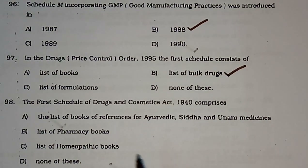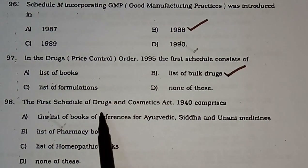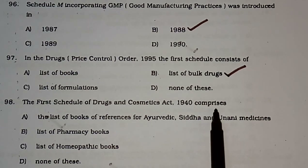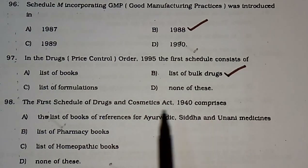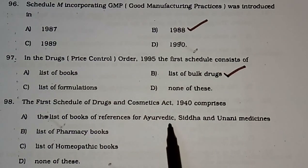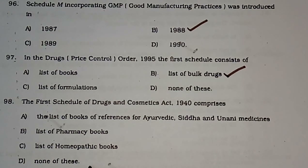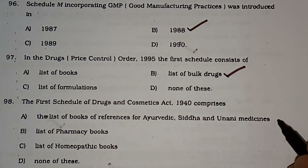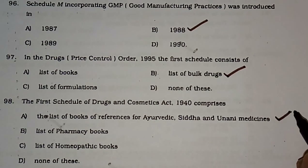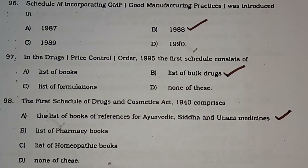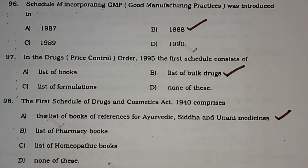Question number 98: The first schedule of the Drugs and Cosmetics Act 1940 comprises — list of books of references for Ayurveda, Siddha, and Unani medicines; list of pharmacy books; list of homeopathic books; or none of these. The correct answer is the list of books of references for Ayurveda, Siddha, and Unani medicines.